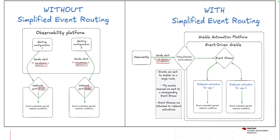With this simplified event routing, you can have multiple rulebook activations listening to the same event stream. Taking ServiceNow as an example, you could have four, five, or six rulebook activations all listening to that same stream. The infrastructure team, networking team, and monitoring team could each have their own rulebook activation — all listening to that same event stream — with one configuration in ServiceNow, one URL to point to, and each team controlling their own rulebooks, conditions, and job or workflow job templates.